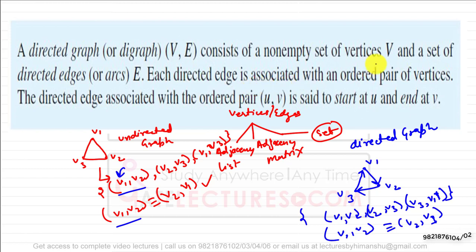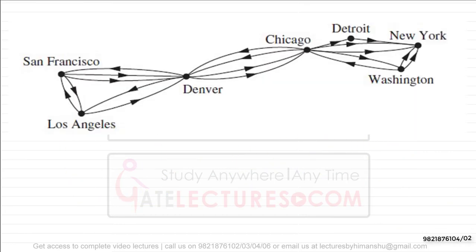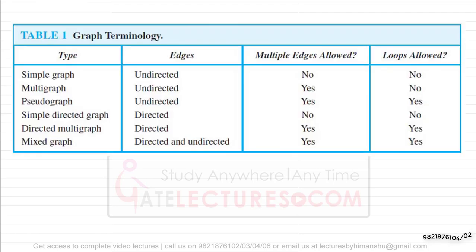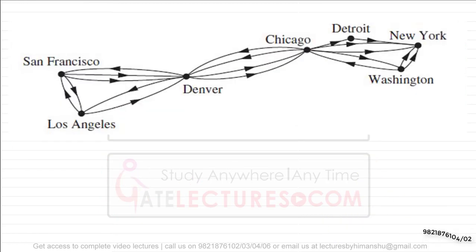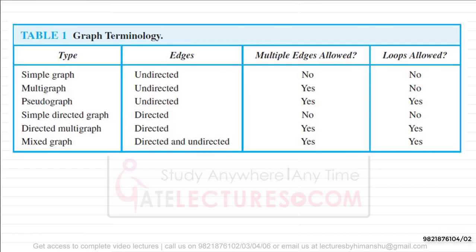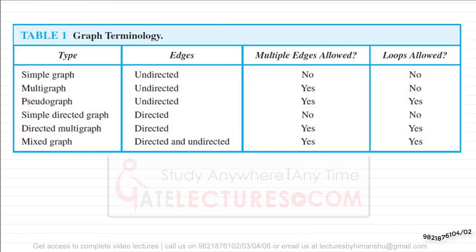Each directed edge is associated with an ordered pair of vertices, and the directed edge associated with the ordered pair (u, v) is said to start from u and end at v. Looking at a graph with all directed edges, if there are two edges between San Francisco and Denver with the same direction, it is a directed multi graph — not a simple directed graph.